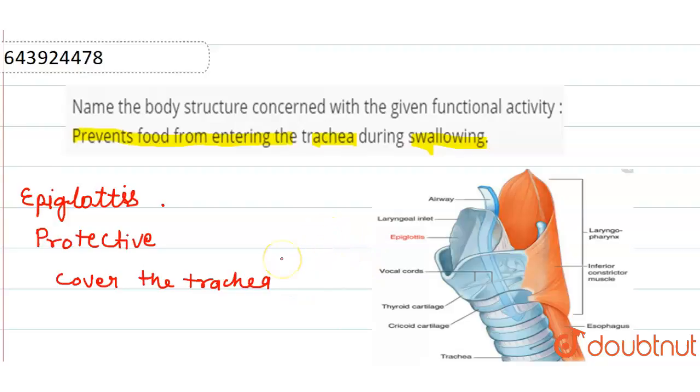It prevents the entry of food to the common pharyngeal space. This epiglottis prevents food from entering during swallowing.